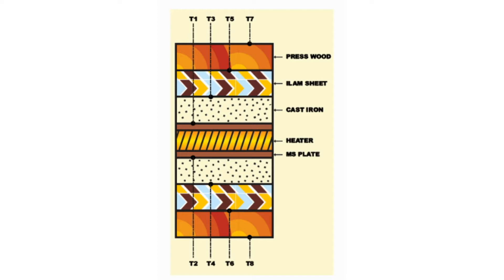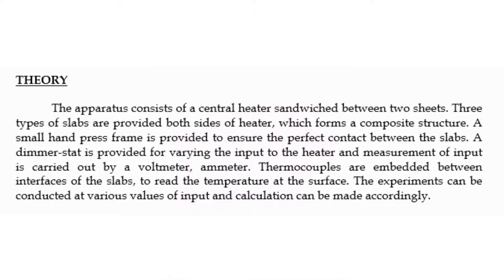A schematic view of the external setup is given in this figure. The heater is placed in the middle, followed by the mild steel plate, cast iron, aluminum sheet, and presswood. Thermocouples are placed at different locations to indicate the surface temperature. The apparatus consists of a central heater sandwiched between two sheets; three types of slabs are provided on both sides of the heater, forming a composite structure. A small hand press frame is provided to ensure perfect contact between the slabs.